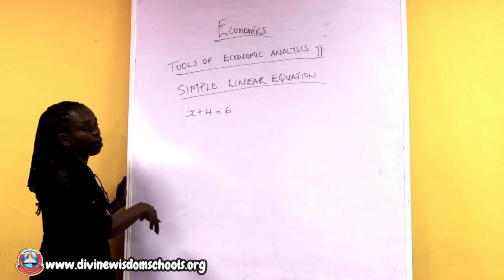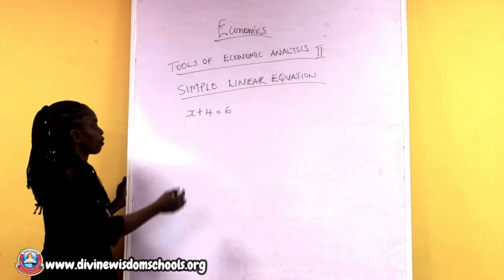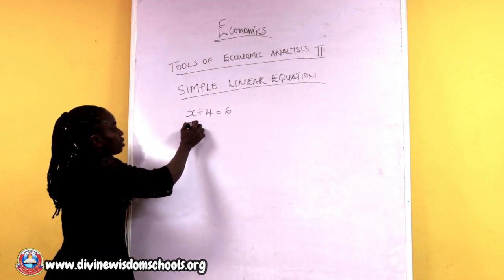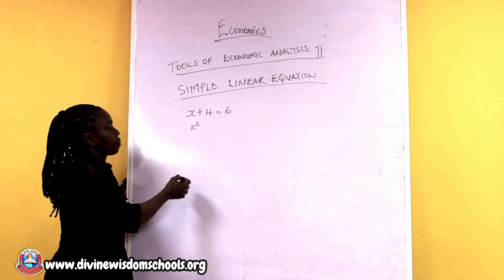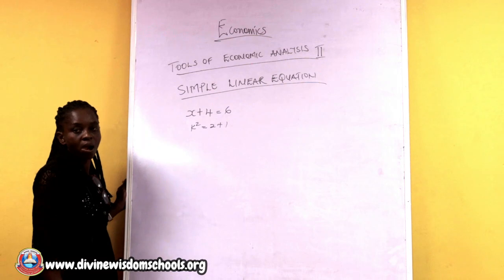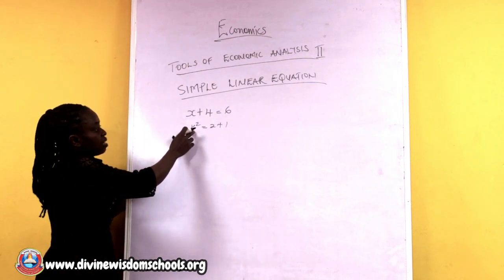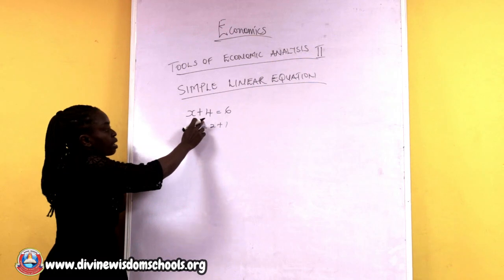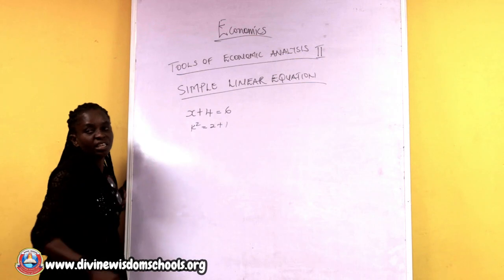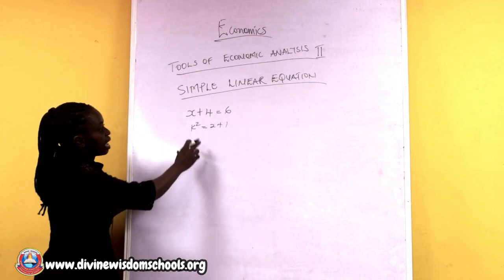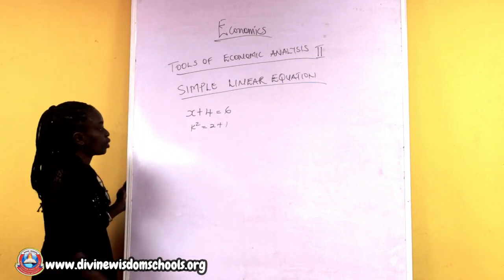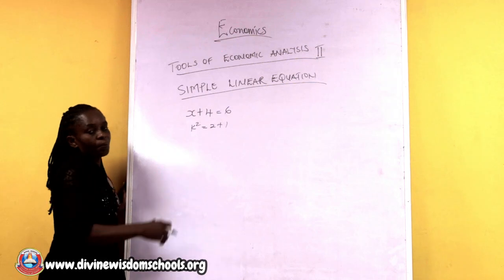You also have other types of equations. For instance, if I change this equation to k raised to the power of two equals two plus one, you can see that the unknown is raised to the power of two. In this case, it is no longer a linear equation — it is called a quadratic equation, because the unknown is raised to the power of two.